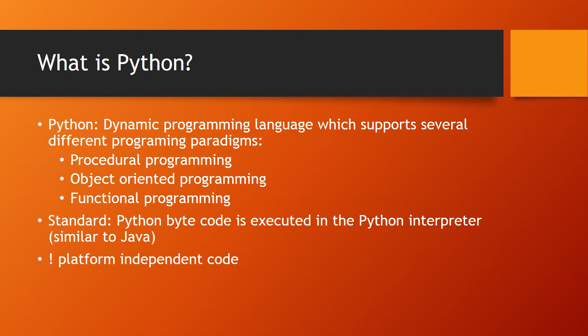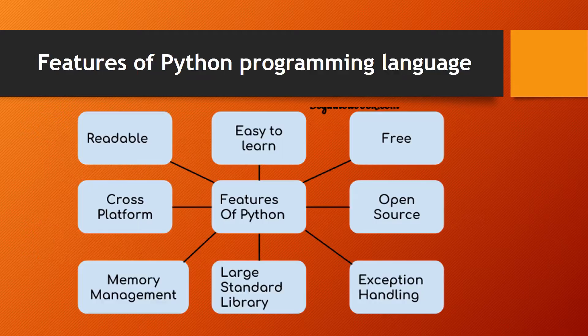Python is a dynamic programming language that supports multiple programming paradigms, which includes object-oriented programming — OOP concepts are also supported — as well as functional programming. The standard Python bytecode is executed by the Python interpreter, similar to Java. It is platform-independent code.